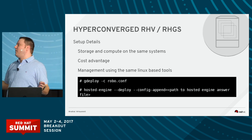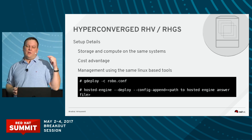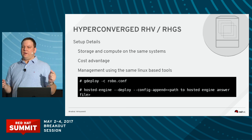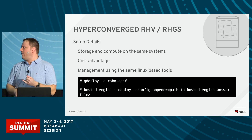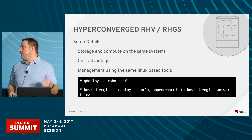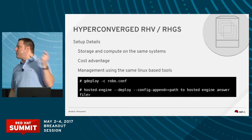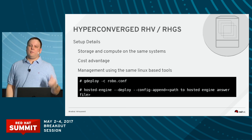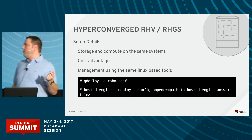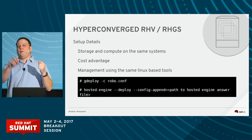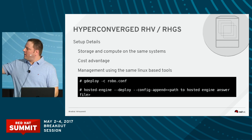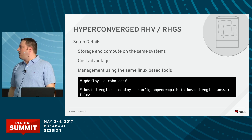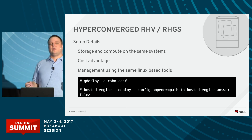And this is so cool — I'm really excited about this. I was actually able to get the deployment of a fully set up, ready-to-go, hyper-converged oVirt-Gluster cluster using two commands. Just gdeploy, and then you point it to robo.conf. That's a file we give you that has some examples, and you just fill it out for your environment. And then hosted-engine --deploy --config-append. There's a file called hcanswers.conf that we also give you — you go through, edit it, set it up for your environment.